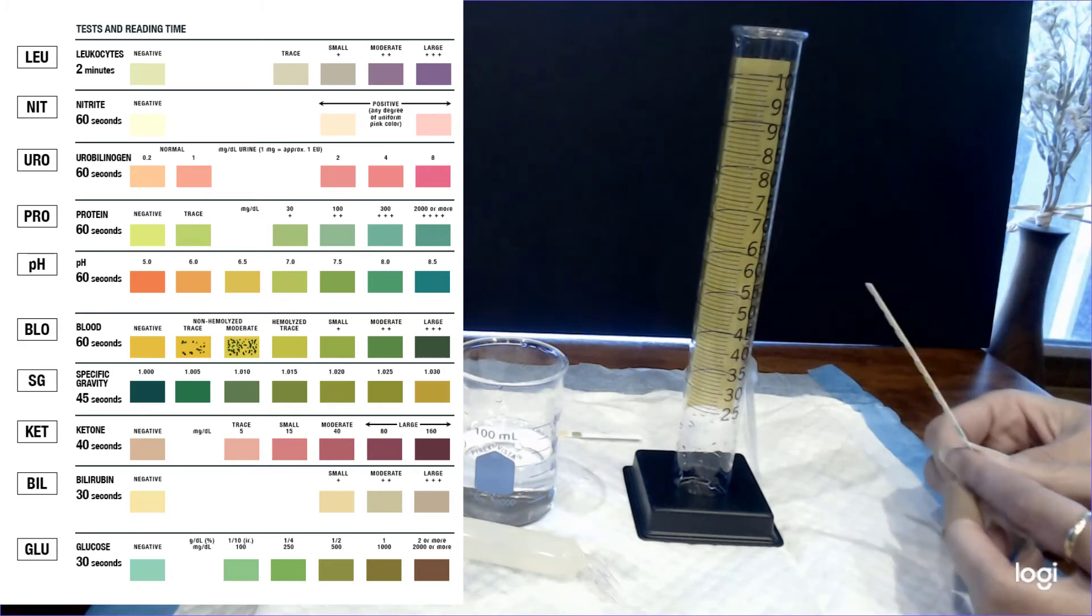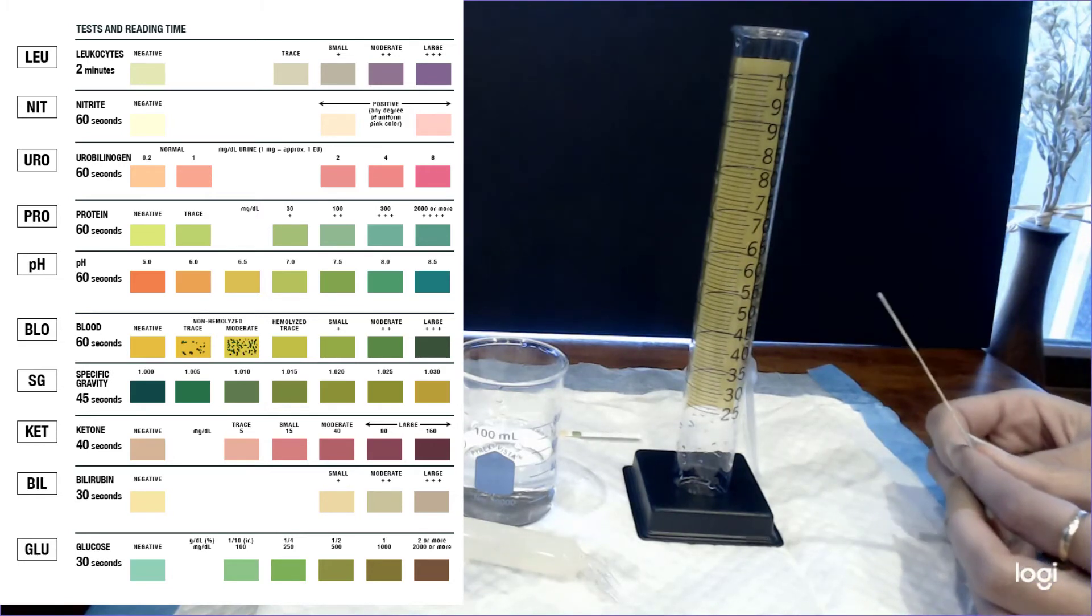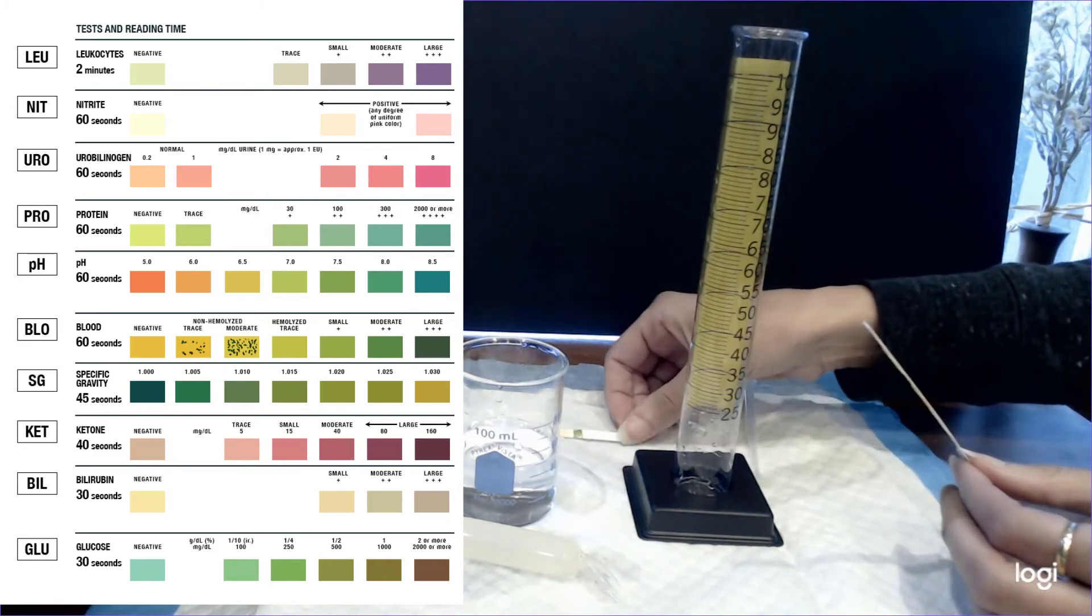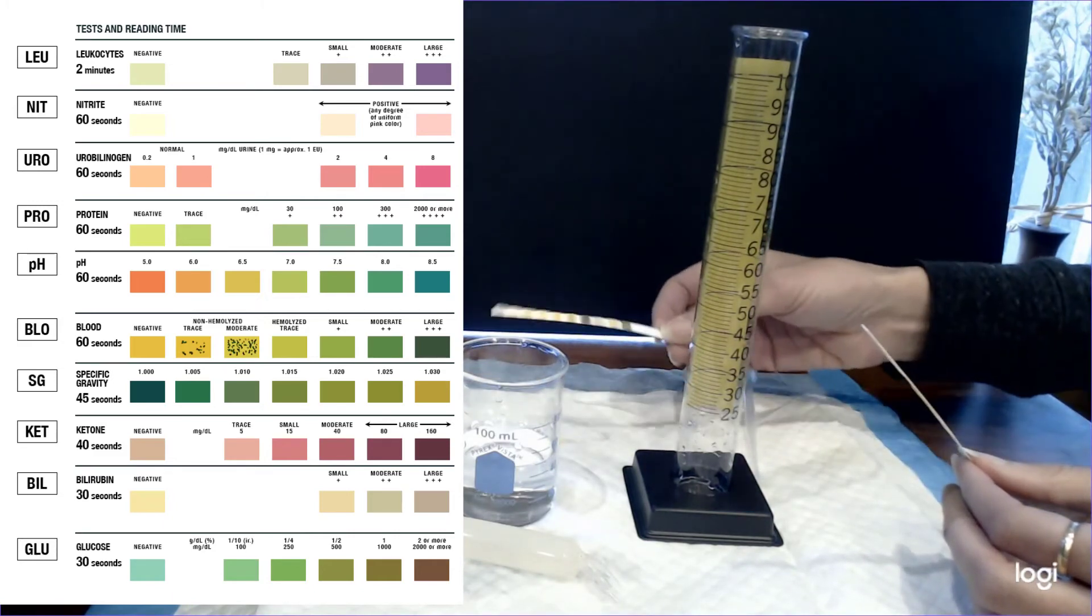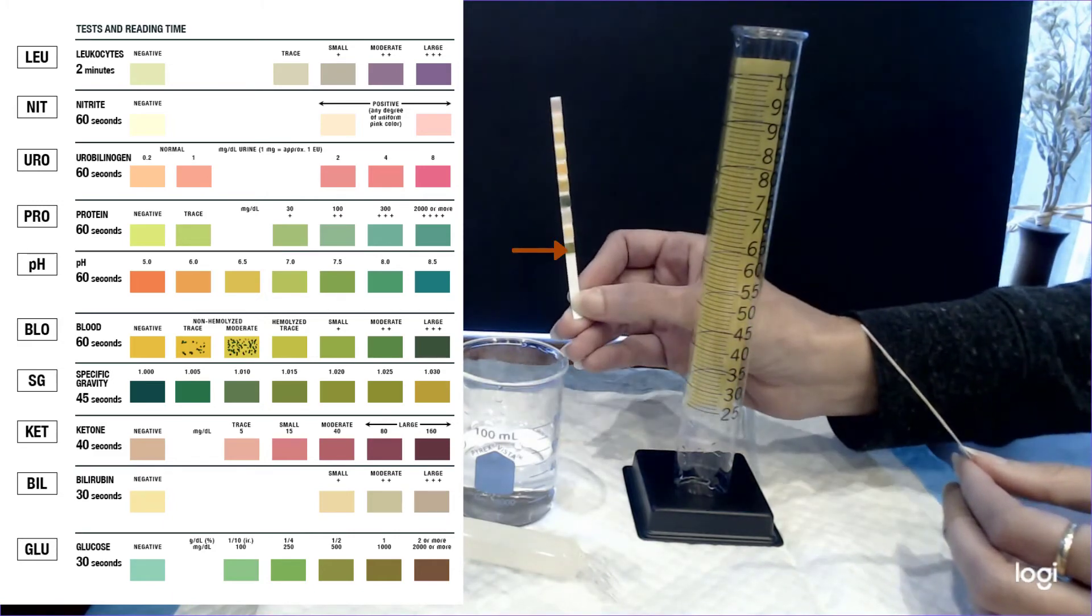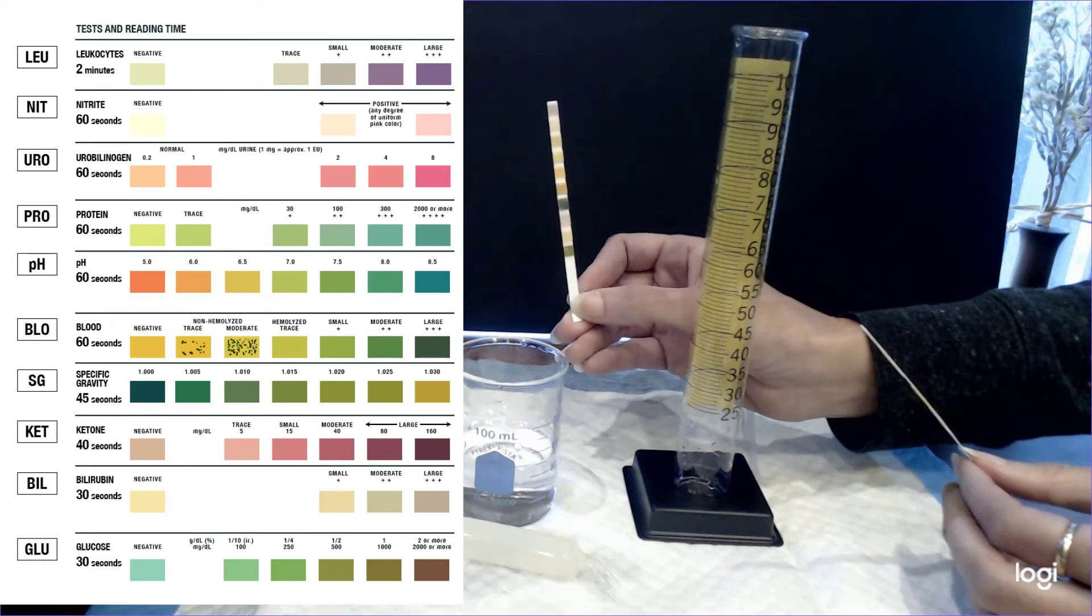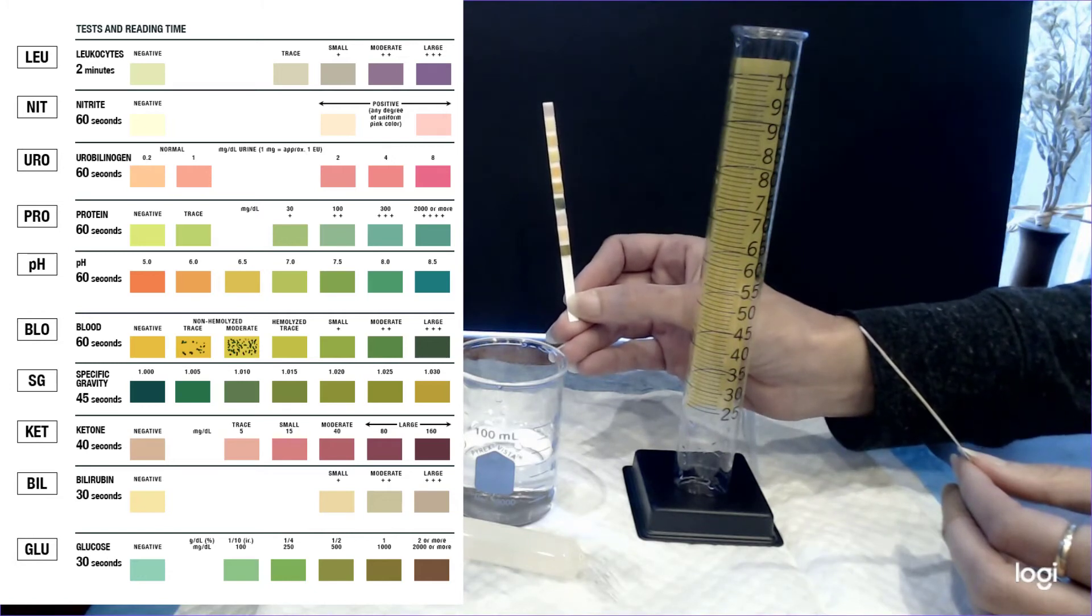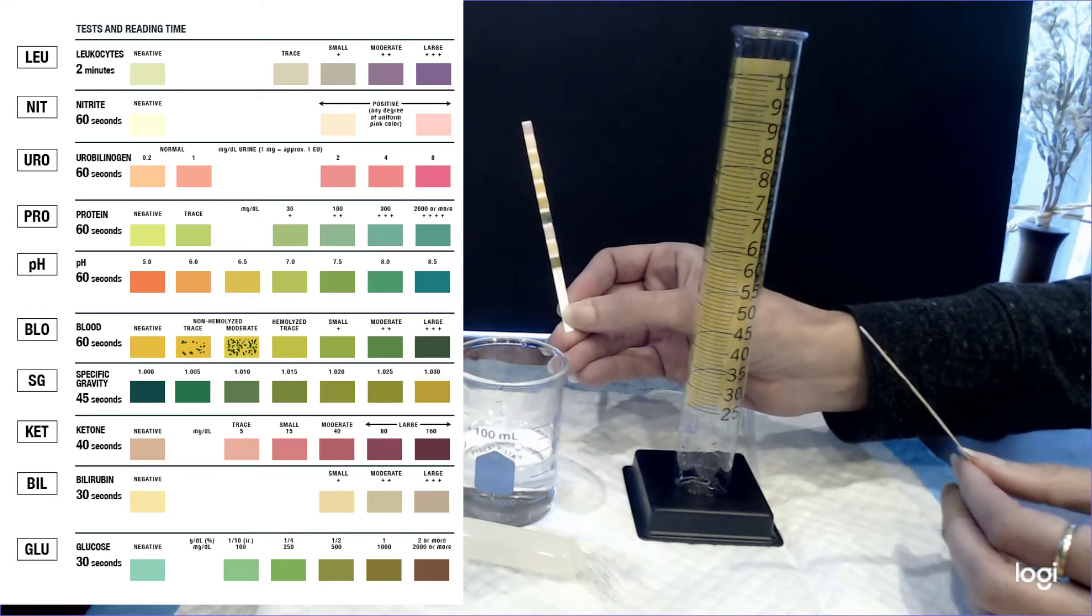The urine dipsticks have ten different things they assess for but the only two that we care about right now are glucose, which is down at the very bottom, and proteins, which are fourth from the top. So after you wait 30 to 60 seconds you can go ahead and compare the color on those pads, which are shown with the brown arrows, against the key which is shown here, and this will allow you to determine if there is glucose and or protein in the solution that surrounded the dialysis bag.